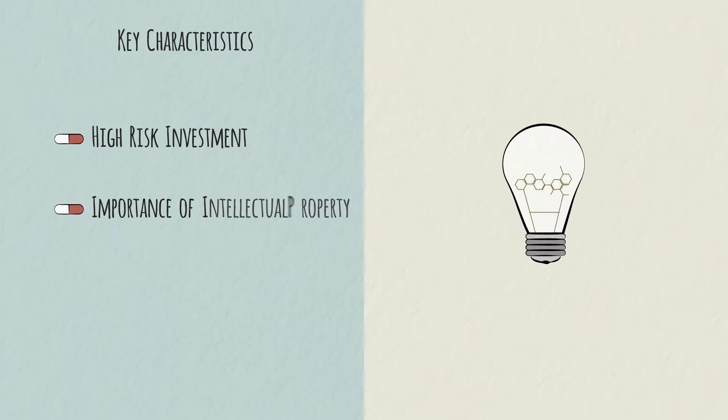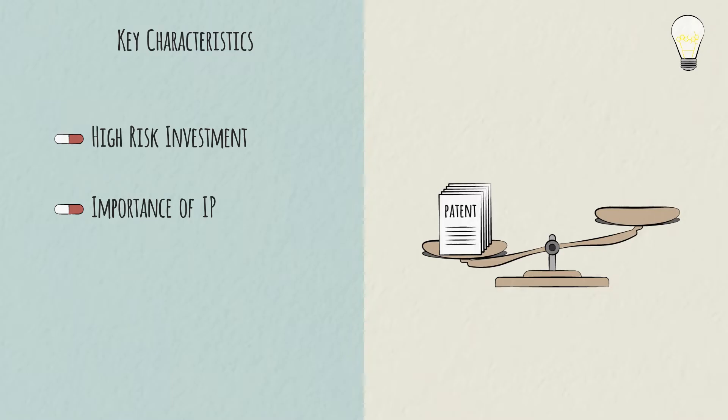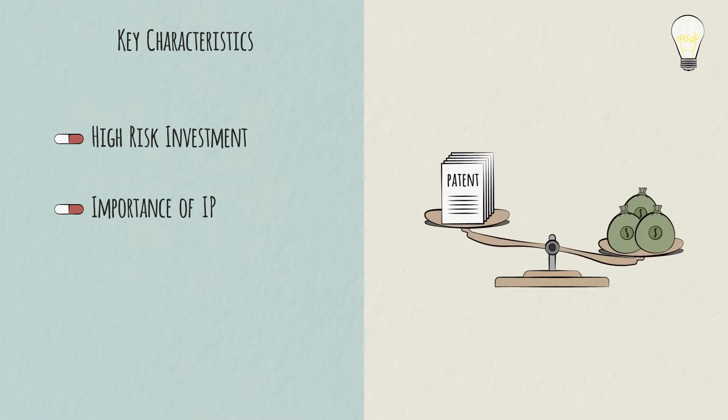Next, IP means everything. A patent like the one Anna will file for her molecule is a pharma company's main asset. It's also the company's core value driver, as it determines future cash flows.